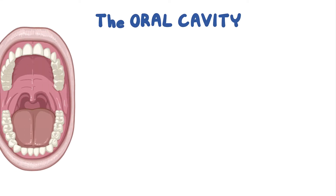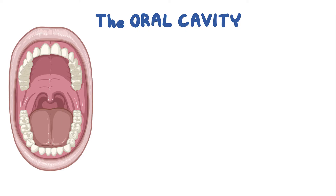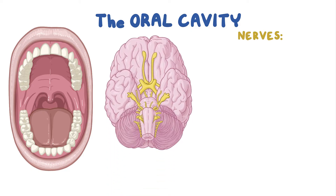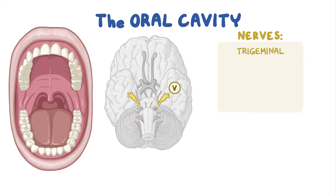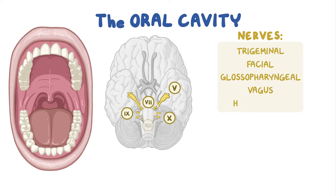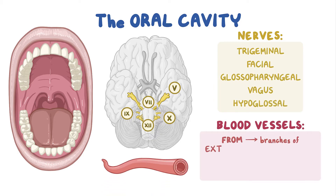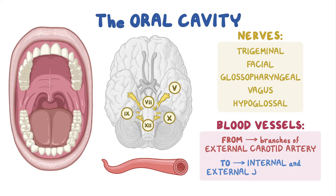The oral cavity or mouth, though quite small, is supplied by a dense network of nerves and blood vessels. The nerve supply comes from the branches of six cranial nerves, namely the trigeminal nerve, facial nerve, glossopharyngeal nerve, vagus nerve, and the hypoglossal nerve, whereas the blood supply comes from the branches of the external carotid artery and the veins drain into the internal and external jugular veins.